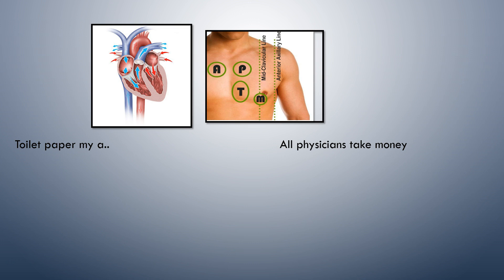A good way to remember the sequence in which you're supposed to auscultate heart sounds is the mnemonic 'All Physicians Take Money.' That helps you remember to start over the area where the aortic valve is, move to the pulmonic, go to the tricuspid, and then over to the mitral.